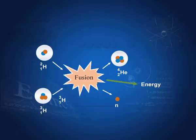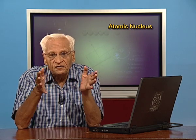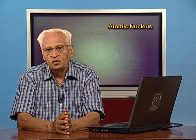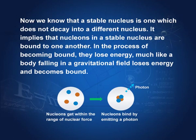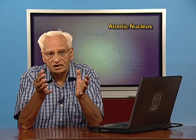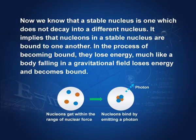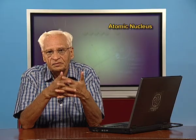Today, we shall again discuss the stability of the nucleus, but now we shall quantify the stability of the nucleus. A stable nucleus is one which does not decay into a different nucleus. It is obvious that nucleons in the stable nucleus are bound to one another. There are four nucleons in this nucleus, and if they are bound together, then the nucleus would be stable; otherwise, it would be unstable.